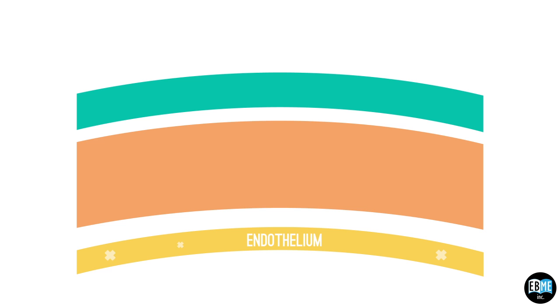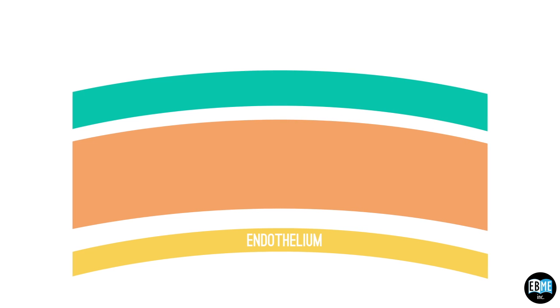When the corneal endothelium gets damaged or stops working, the cornea becomes swollen and cloudy.